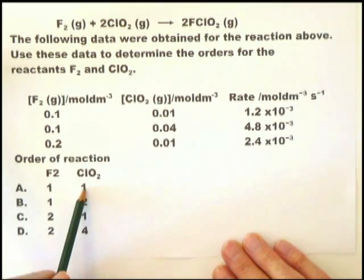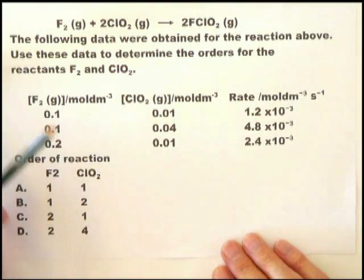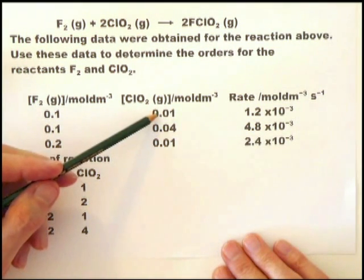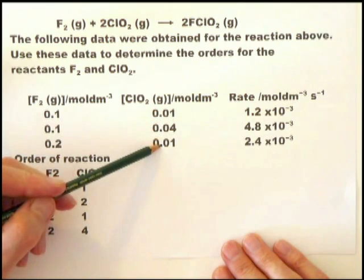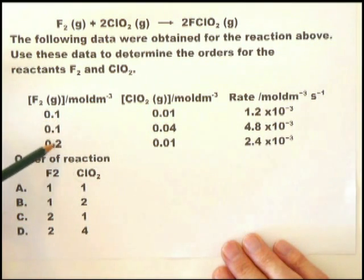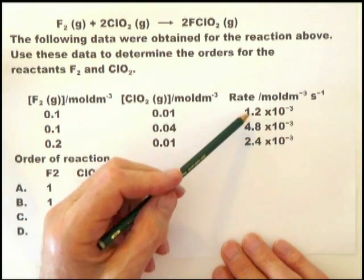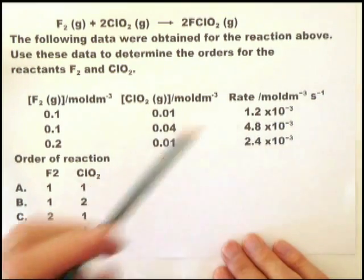That is multiplied by 4, and lo and behold, that is multiplied by 4. Therefore, for chlorine dioxide, we have a direct rate. It's either A or C. Then we look at the two which are the same. They've doubled the concentration and doubled the rate. Therefore, that's also first order.